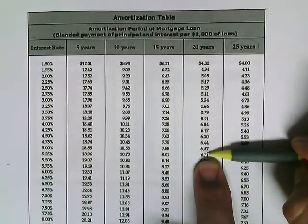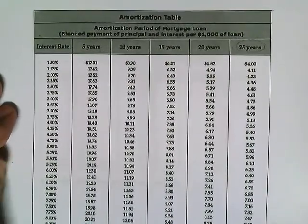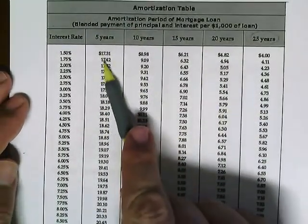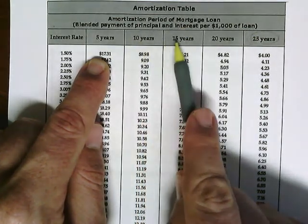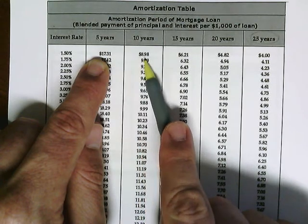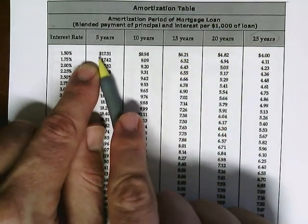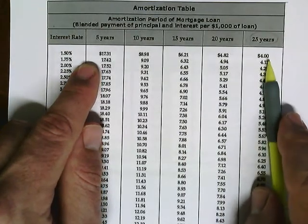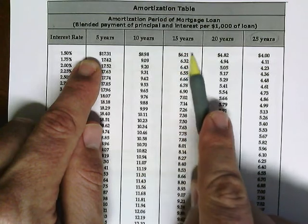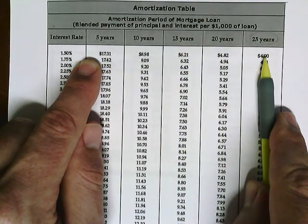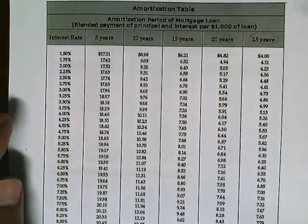Notice the values at the top of the table as the amortization period increases. The amounts go: 17.31, 8.98, 6.21, 4.82, 4 dollars — so the longer you take to pay, the lower the monthly payment becomes. That's an inverse relationship: amortization goes up, payment goes down.